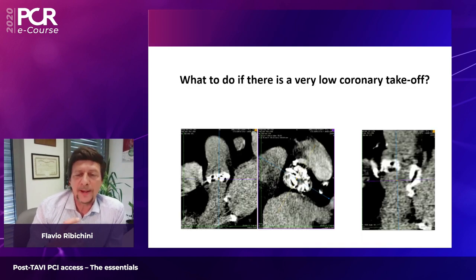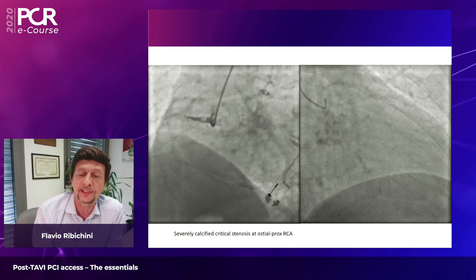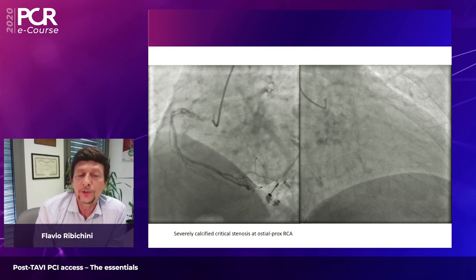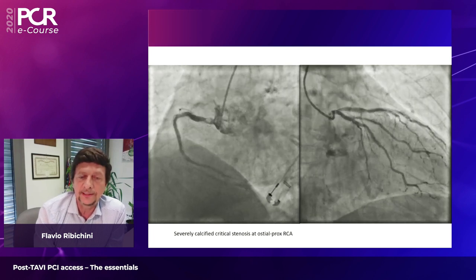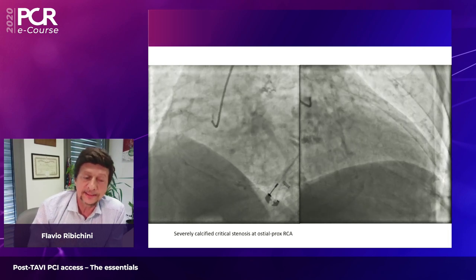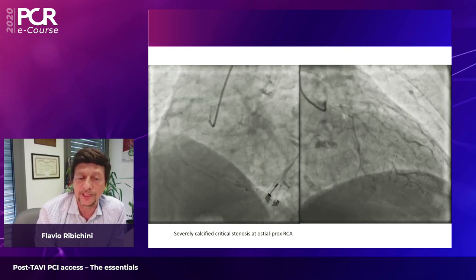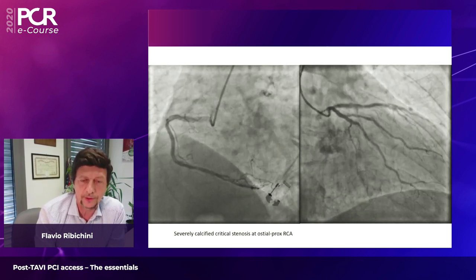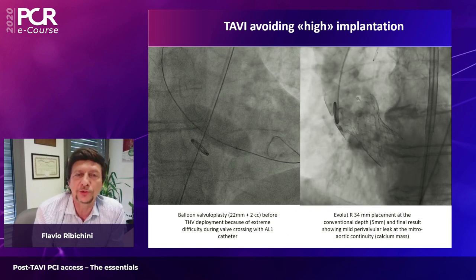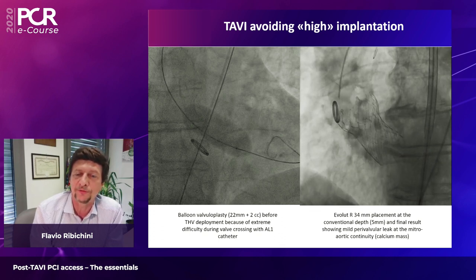The next case involves massive calcification in a high-risk TAVI candidate. The CT scan shows a low origin of the right coronary artery, which adds difficulty. The coronary angiogram confirms the origin of the right coronary artery is quite low, with massive calcification just after the ostium. Again, you might ask why not treat the artery before — but I want to show you that this can be done safely after valve implantation. The CoreValve was implanted at regular height following balloon pre-dilatation.